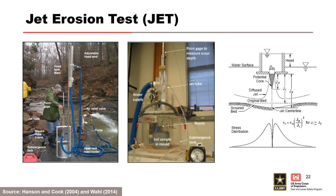The jet erosion test apparatus was developed by Greg Hansen at the USDA's Agricultural Research Service, which includes the field and lab jet apparatus. It was developed for streambed erosion initially, but was then applied to spillway erosion, overtopping erosion, and concentrated leak erosion. In the jet, a jet of water is directed at the soil sample and the rate of soil removal is measured. The jet apparatus attacks the soil surface with a submerged hydraulic jet. The starting nozzle position and test head may be adjusted to vary the stress applied to the soil sample, although once the test head is selected, it is usually held constant for the duration of the test.